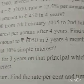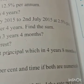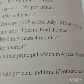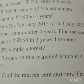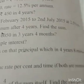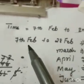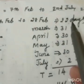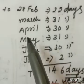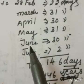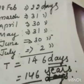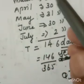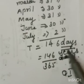Here principle is given, time is given, rate is given. Time given: 7th February to 2nd July — we count the days. 7th February to 28th February is 22 days (including both). March: 31 days, April: 30 days, May: 31 days, June: 30 days, July: 2 days — because on 2nd July the money is being returned. Total time: 146 days.